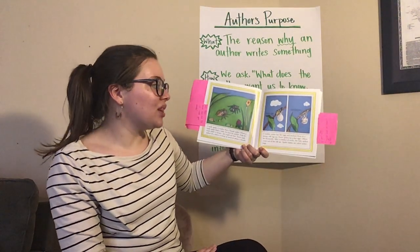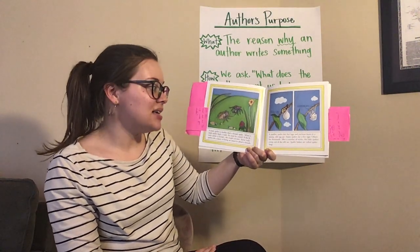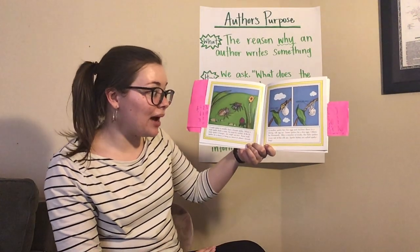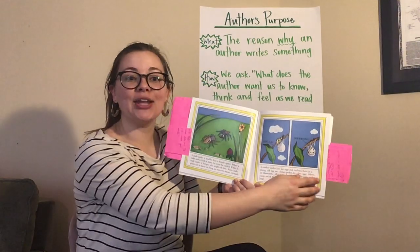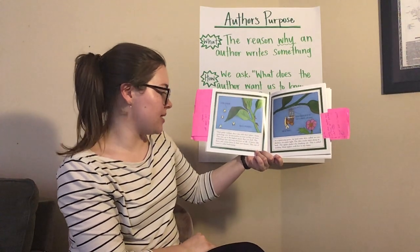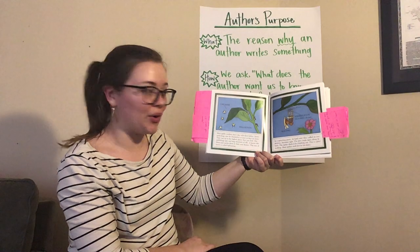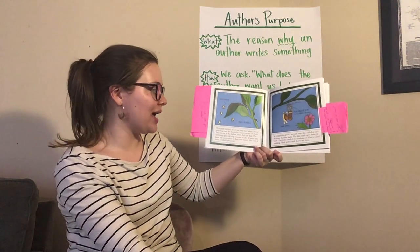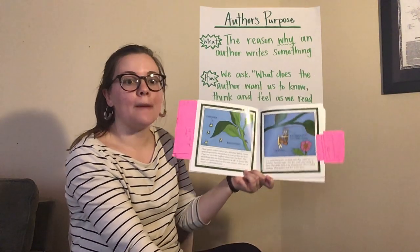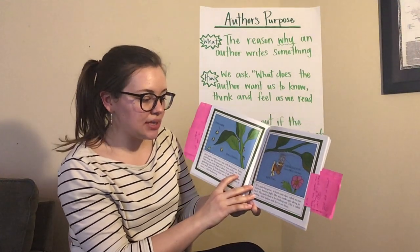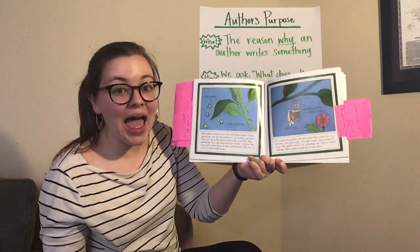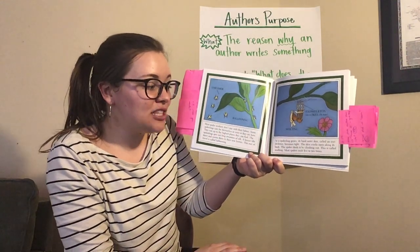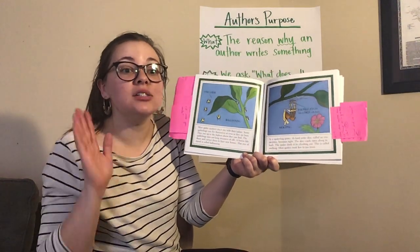A mother spider lays her eggs and encloses them in a strong silk egg sac. Some spiders lay a few eggs and others lay thousands. After a number of weeks, the baby spiders creep out of the silk sac. Spider babies are called spiderlings. Most spider mothers don't stay with their babies. The spiderlings spin out long streamers of silk; a breeze lifts them and carries them to their new homes — this way of traveling is called ballooning. As a spiderling grows, its hard outer skin called an exoskeleton becomes tight and starts to crack. The spider sheds it by climbing out, and this is called molting. Most spiders molt five to ten times.